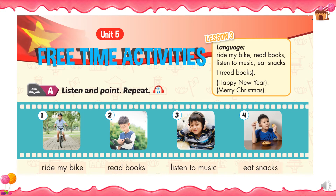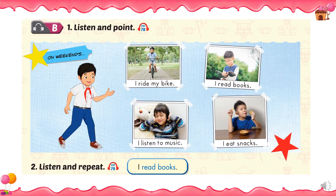Unit 5, Free Time Activities, Lesson 3, A. Listen and point. Repeat. 1. Ride my bike. 2. Read books. 3. Listen to music. 4. Eat snacks.